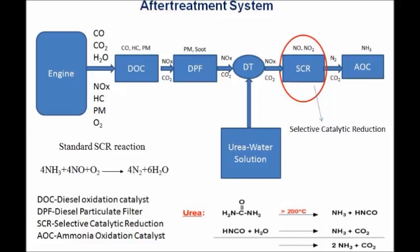To convert NOx to free nitrogen, some reductant is required. You can use aqueous ammonia — that is urea water solution — anhydrous ammonia, and direct ammonia gas. Since ammonia gas is more irritant and slightly toxic, most automotive OEMs use urea water solution instead. The chemical formula of urea is NH2-CO-NH2 as shown in the slide. When the exhaust gas temperature goes above 200 degrees centigrade, the urea will undergo evaporation, thermolysis, and hydrolysis to convert urea into ammonia and isocyanic acid. During hydrolysis, isocyanic acid gets converted to NH3 and CO2.